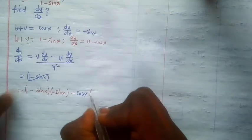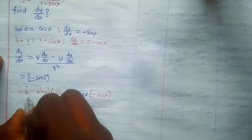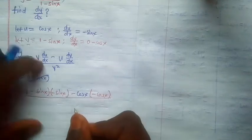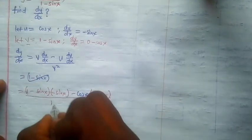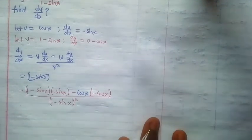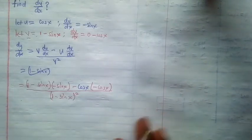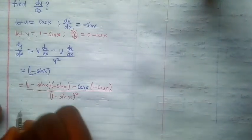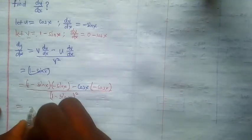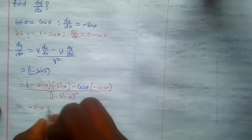dv/dx is negative cosec x, divided by v squared. V squared is 1 minus sine x squared. So what do we get from here? We simply multiply everything here.